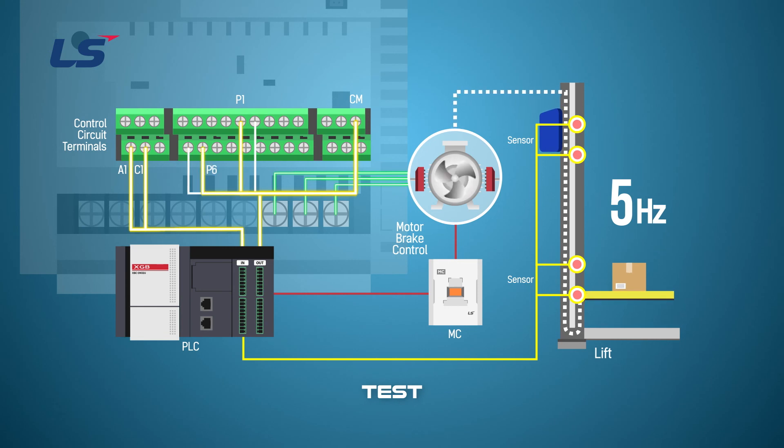When it arrives at the upper sensor after passing the acceleration section, the signal changes from P6 to P5 and the speed changes to low speed.